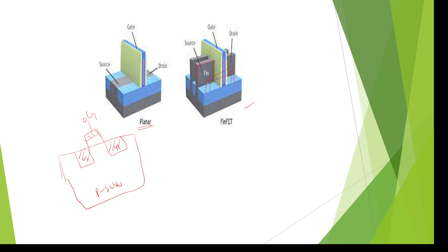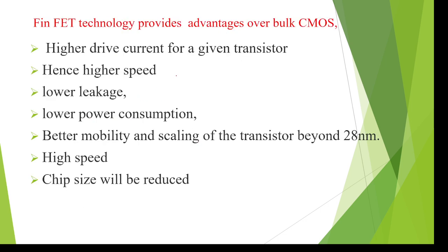If you want one more source and gate terminal, you can design it. By using a single substrate, we can design more and more transistors at a time. So with this, we can reduce power consumption, we can increase the speed, and we can reduce the chip size. It consumes less power and is automatically a high-speed device. The leakage current is also very less.